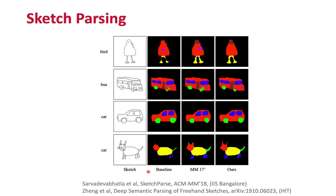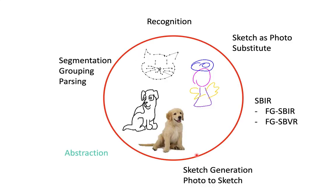Adjacent to segmentation, we also have problems like sketch parsing — rather than labeling particular edges and strokes into semantic parts, the goal is to label the pixels enclosed by different edges into semantic parts. This has been an ongoing area of research. A rather more understudied topic which I find quite fascinating is sketch abstraction.